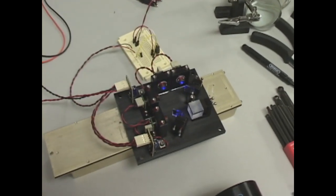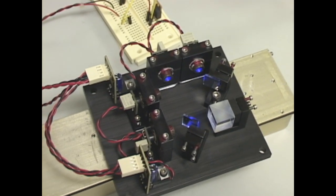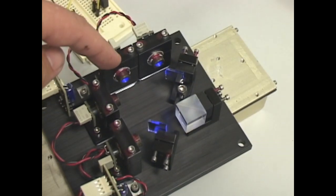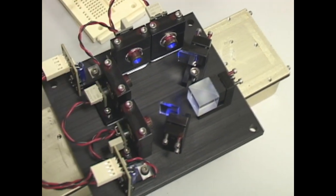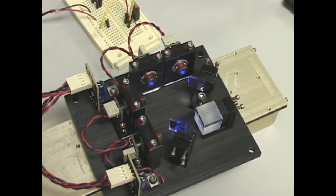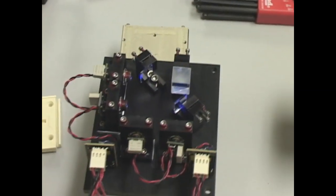The way it works is there are four 445 nanometer laser diodes in each one of these modules right here, and it combines all four of those beams into one beam using mirrors and a PBS cube.